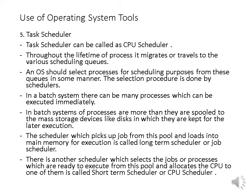The last tool is the task scheduler. There are two types of schedulers: the first is the long-term scheduler or job scheduler, and the second is the short-term scheduler or CPU scheduler. Task scheduler is also known as the CPU scheduler. Throughout the lifetime of a process, it migrates or travels to various scheduling queues, and the operating system should select processes for scheduling from these queues.